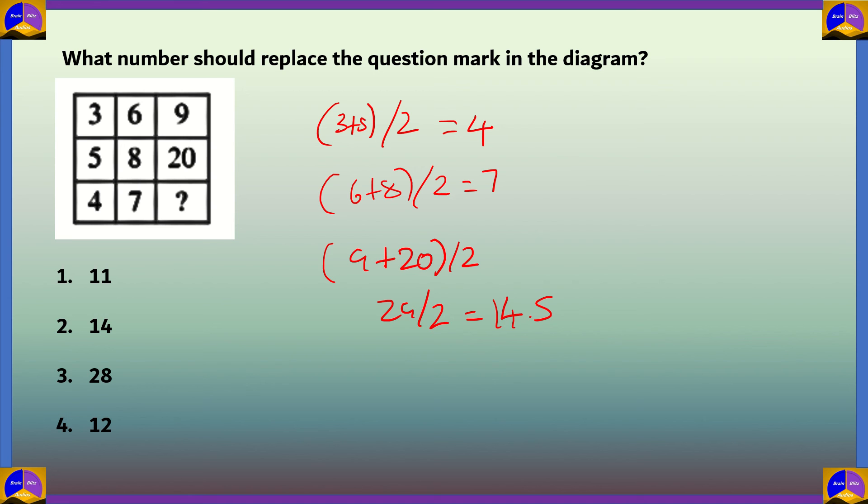We have to find another pattern in the figure. If we look horizontally, we see 3 plus 6 equals 9, but 5 plus 8 equals 13, not 20.